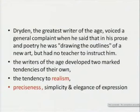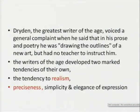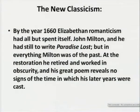The writers of the age developed two marked tendencies of their own: the tendency towards realism — the representation of reality as such — and a different style or technique of writing, which was in the preciseness, austere simplicity, and elegance of expression. Due to this new classicism, by the year 1660, Elizabethan Romanticism had all but spent itself. John Milton had still to write Paradise Lost, but in everything Milton was of the past even at this time. At the restoration he retired and walked in obscurity — he was blind — and his great poem reveals no signs of the time in which his later years were cast.